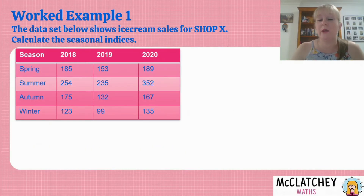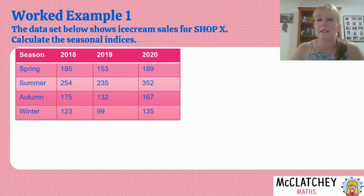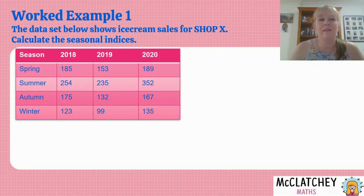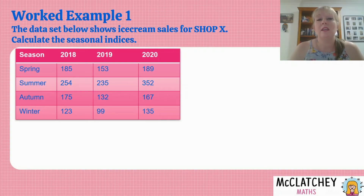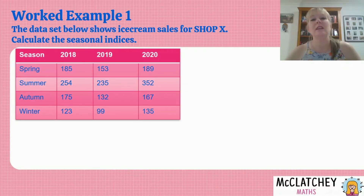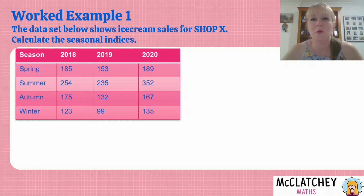So let's look at our first worked example. This is ice cream sales for shop X, and we're going to calculate some seasonal indices. To calculate seasonal indices you need at least a year of data — ideally a few years to get good information and make predictions about your trends. Here we've got three years of data and four seasons. In these videos I'm going to be using our common seasons of spring, summer, autumn, and winter.